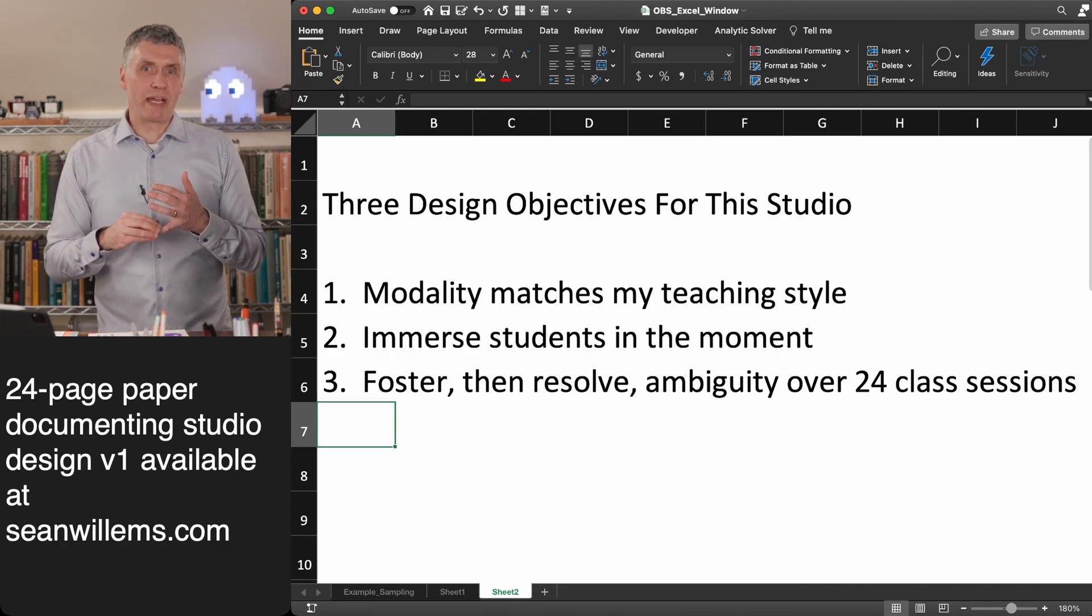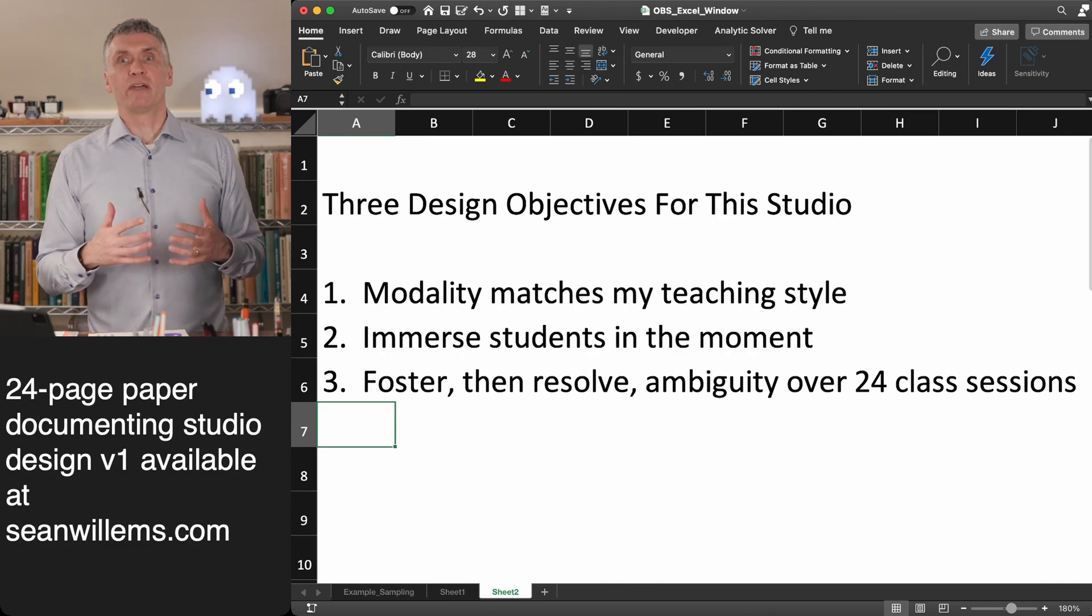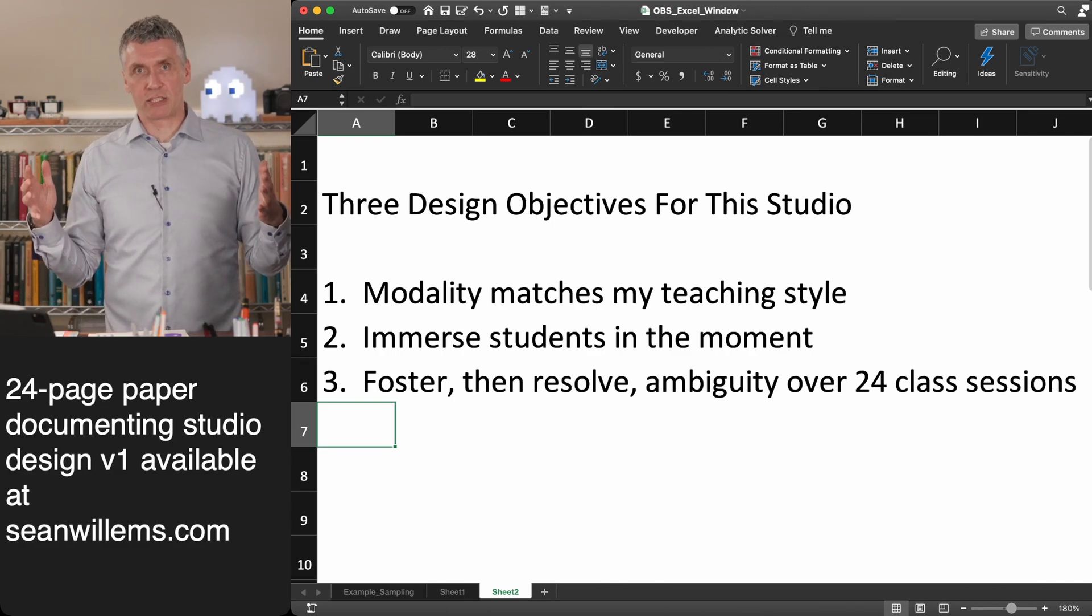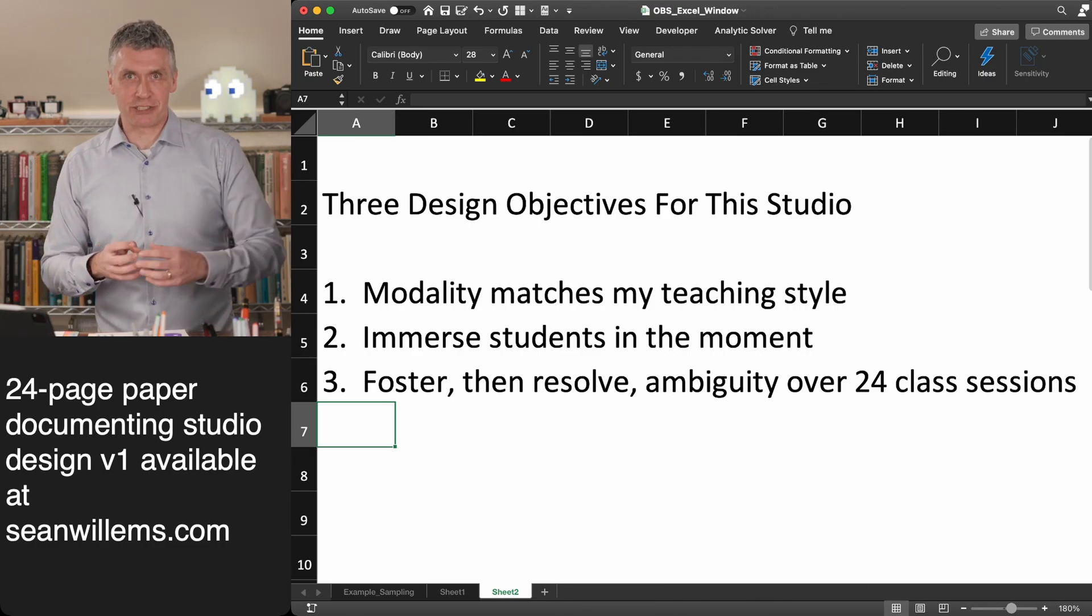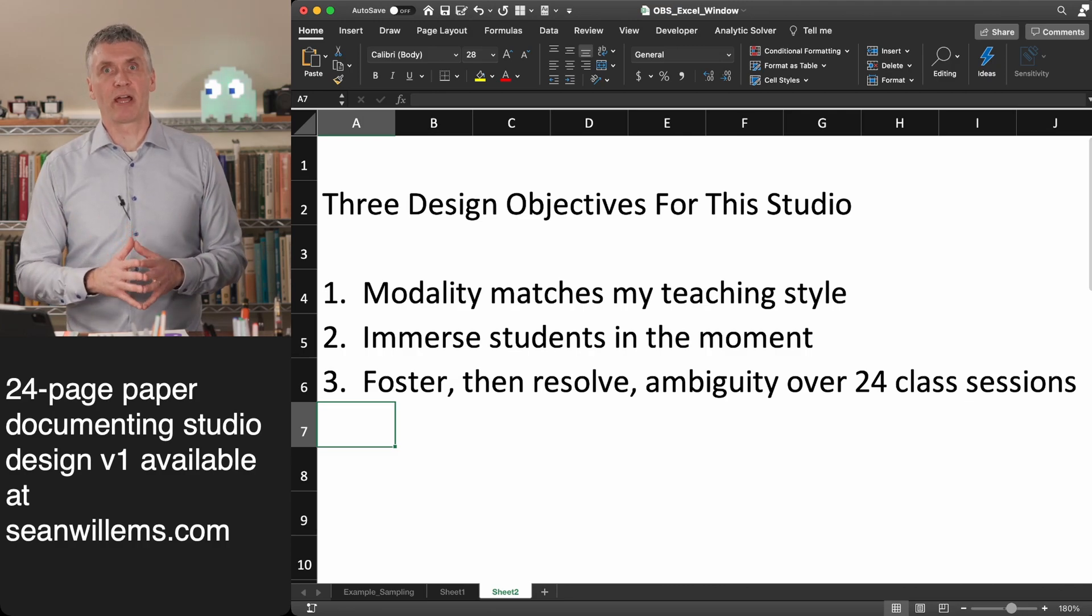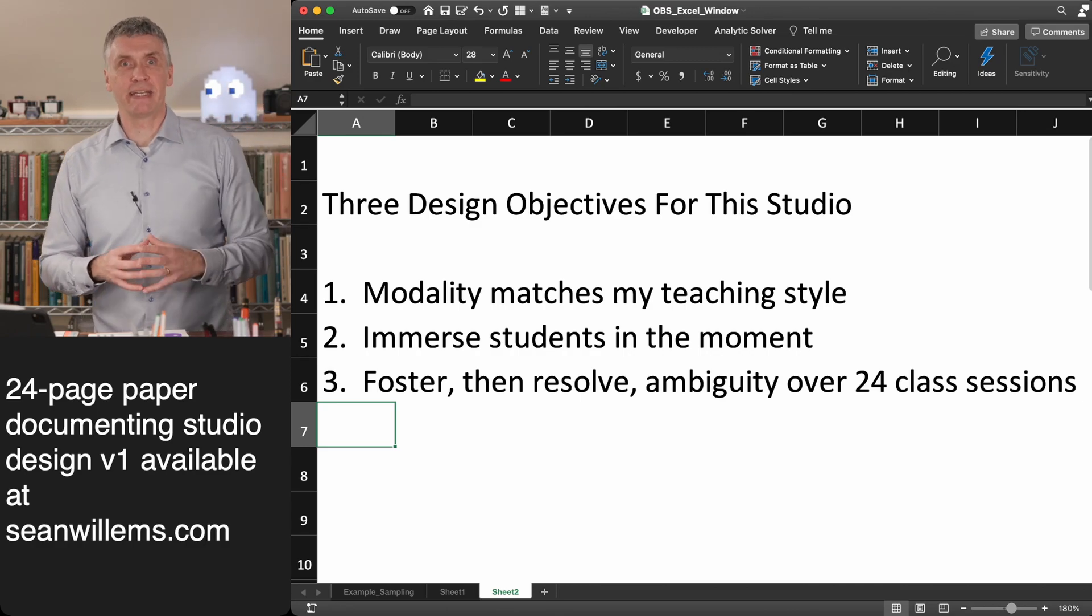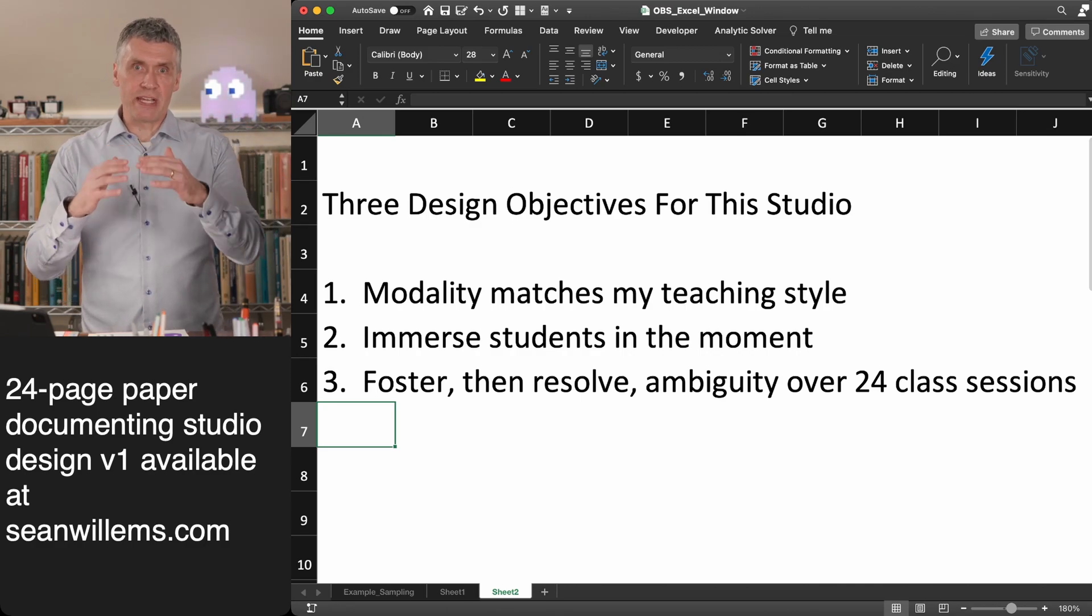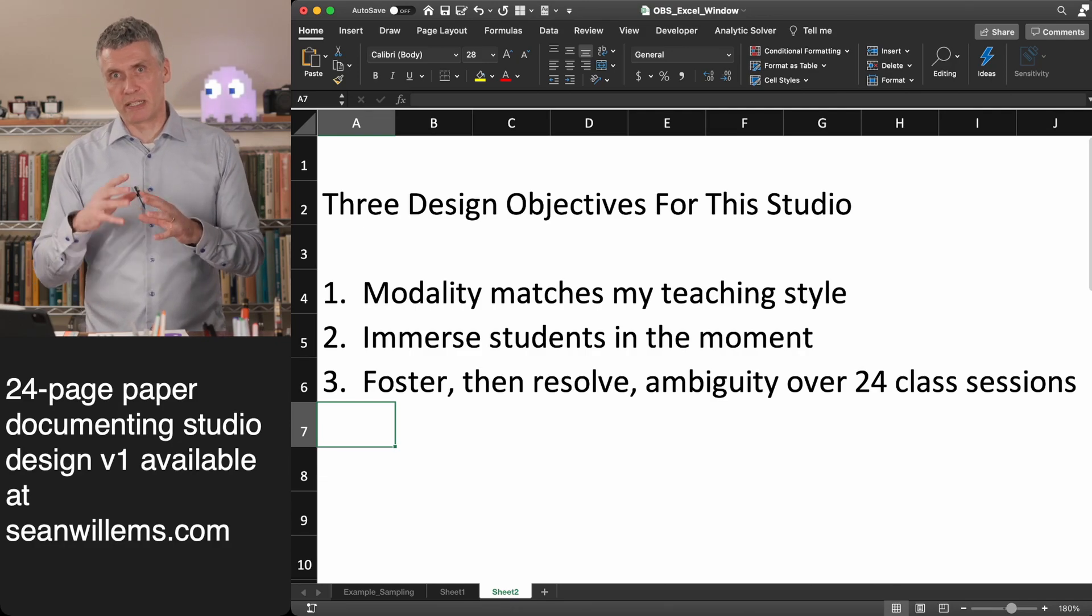The other main design objective was to foster, but then resolve ambiguity over the 24 class sessions. So again, just like on campus, this is a slow process to drive learning. We're not trying to get all the learning done in one 90 minute session. We're doing this over, we're letting this percolate over many sessions. And these three objectives are, need to be internally consistent and self-reinforcing to make that happen.